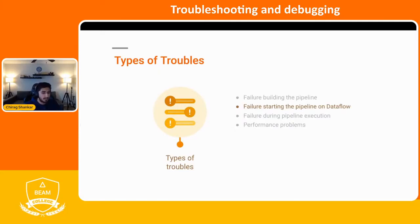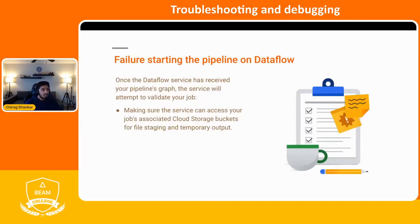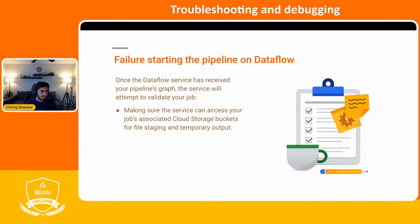The next type of trouble is failure starting the pipeline on Dataflow. Once the Dataflow service has received your pipeline graph and your Beam model is compiled and can be executed, the service will attempt to validate your job. For example, are your PubSub subscriptions valid, is your path right, is your Google Cloud Storage bucket accessible and created? It'll also check permission issues — does your service account have the permissions to access the different services you're using in Dataflow?